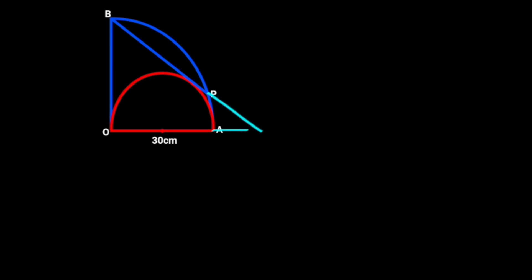To solve this problem, we start by extending the tangent and line OA; let the point of intersection be K. Next we draw a perpendicular line from the center of the semicircle to the tangent; let the point of intersection be Q, and the center of the semicircle S. Also, let's represent line QP as a, line KP as b, and AK as c.